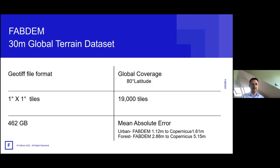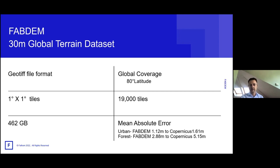FAB DEM is a 30-meter resolution dataset provided in GeoTIFF format as one-by-one degree tiles — 19,000 tiles in the full dataset. Global coverage extends up to 80 degrees latitude. The mean absolute error figures compared to Copernicus are detailed in the paper. Where is the best place to apply FAB DEM? LiDAR remains the gold standard, but less than 1% of the globe is covered by it. FAB DEM sits between LiDAR and SRTM/MERIT, providing a significant step up for global coverage at 30-meter resolution.